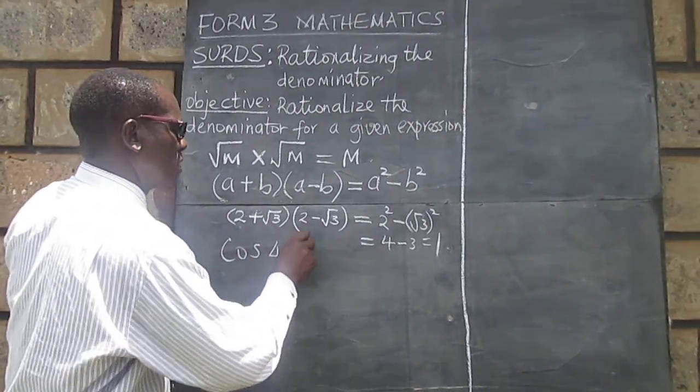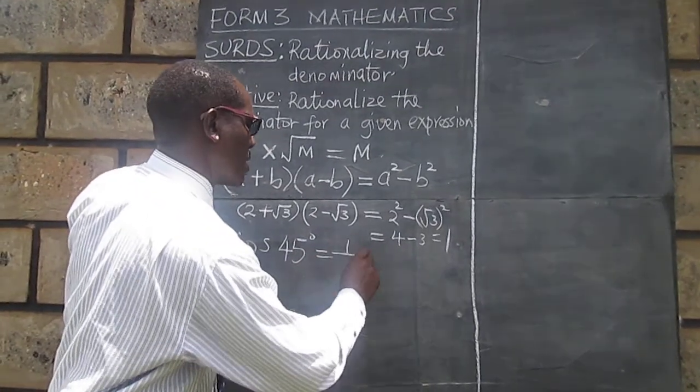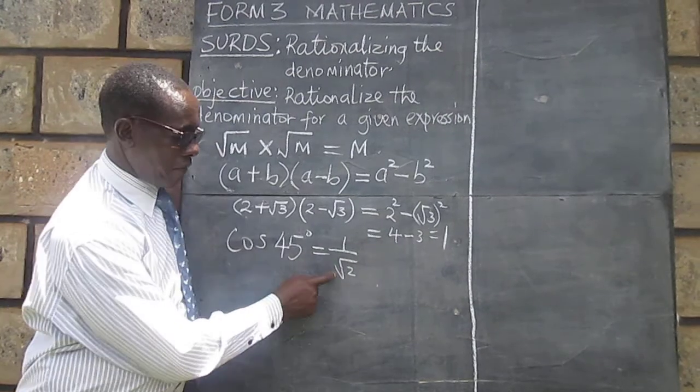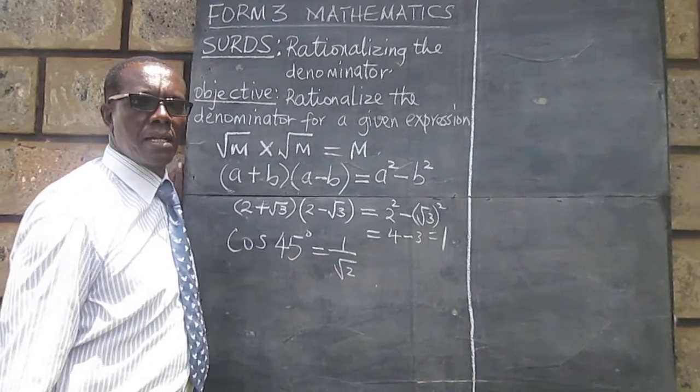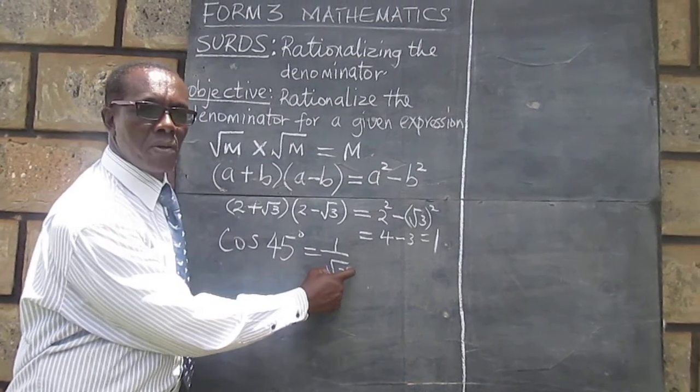The cosine of 45 degrees, we know it is 1 over the square root of 2. When we look at this fraction, the denominator is a surd. It's an irrational number.